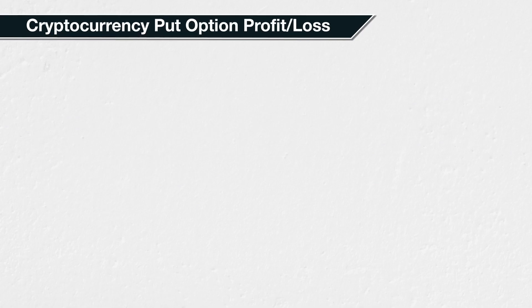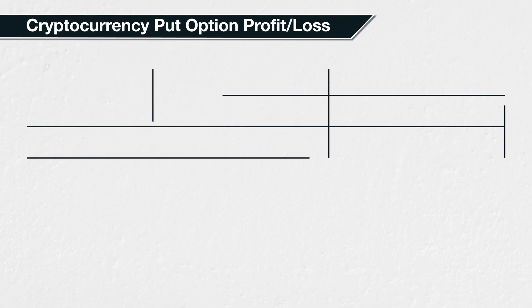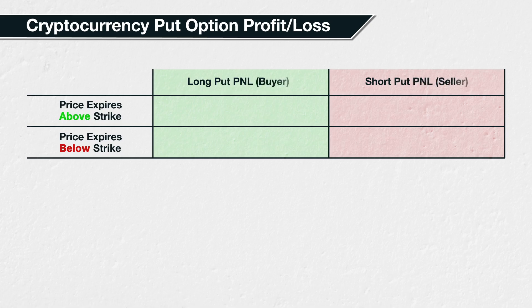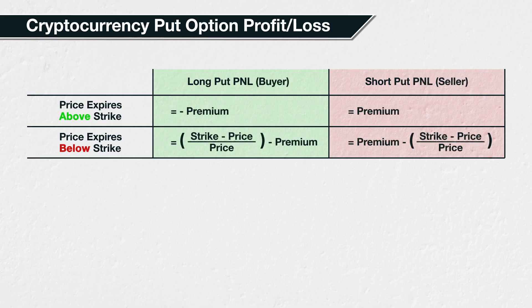In this lecture we will cover the maximum profit or loss of a Bitcoin put option, measured in Bitcoin, for both the buyer and the seller. It's particularly important to be aware of how this differs to the calculations given in lecture 5.7.